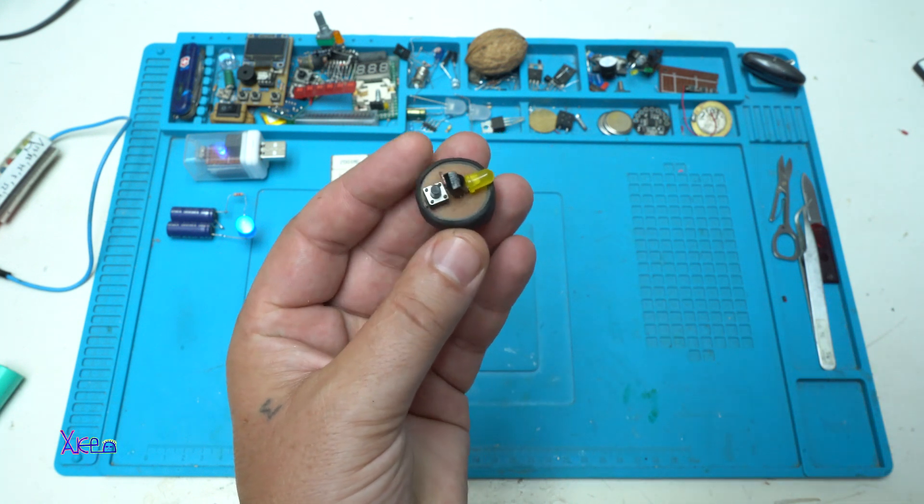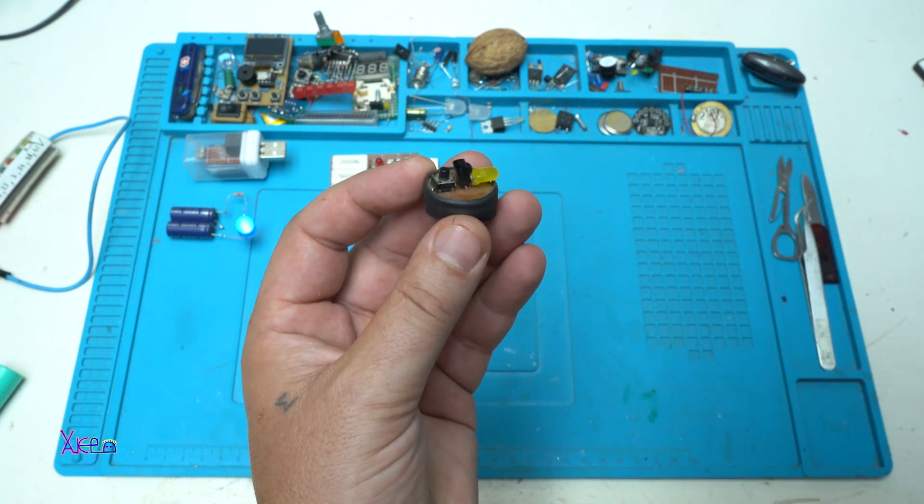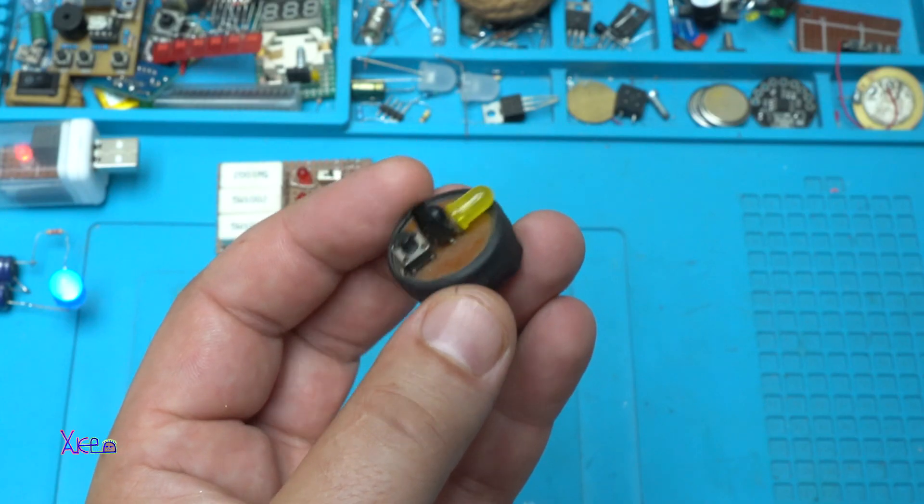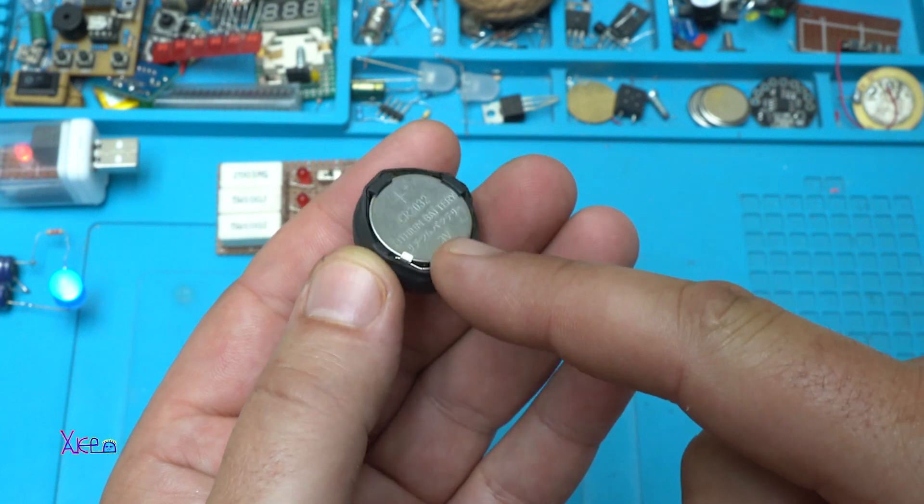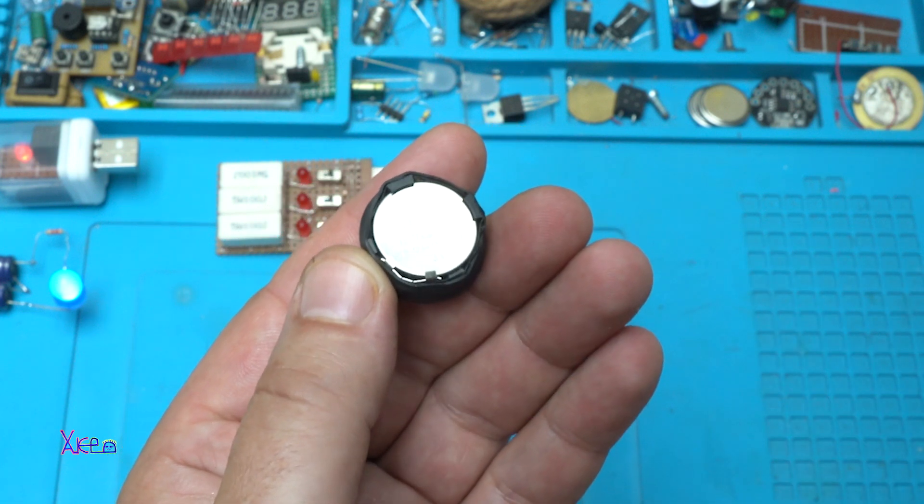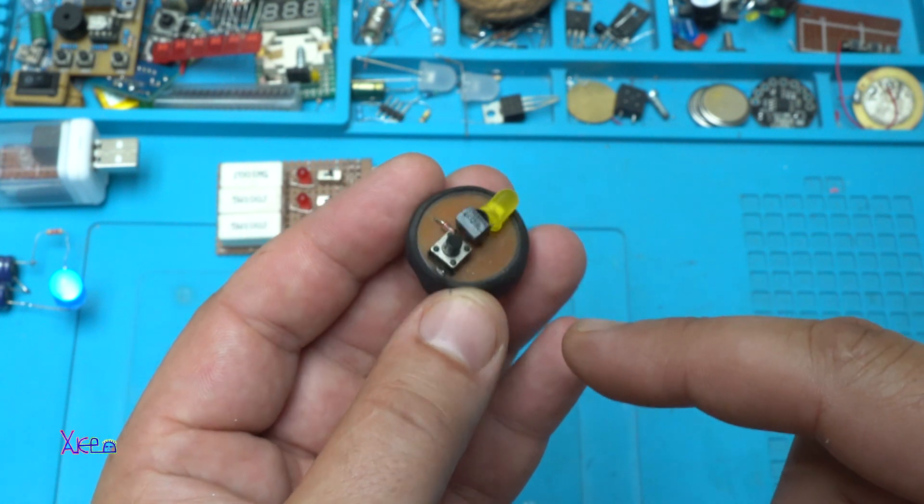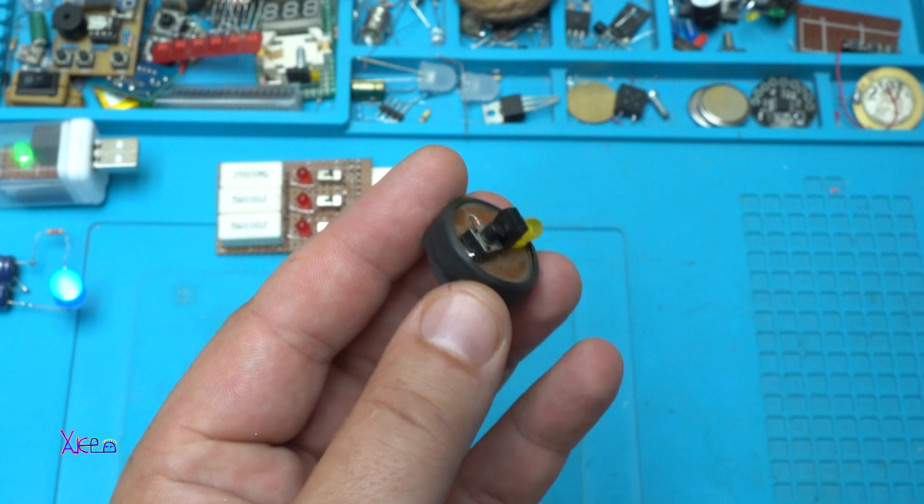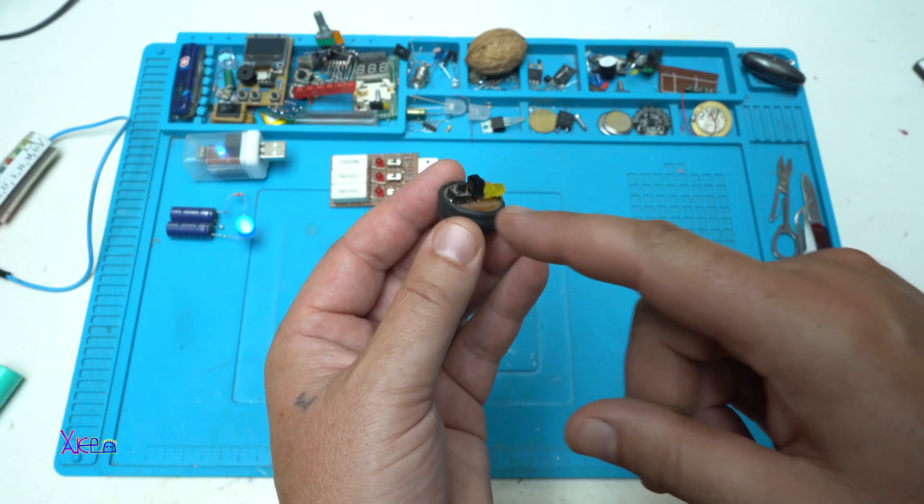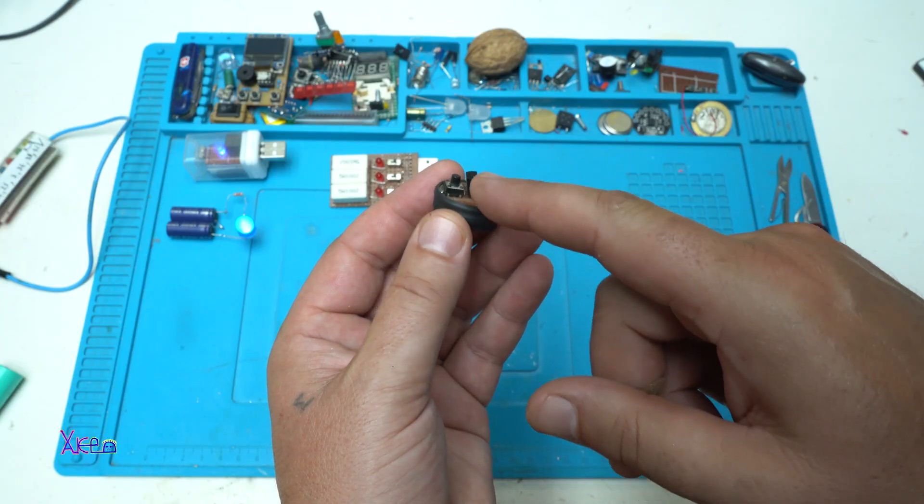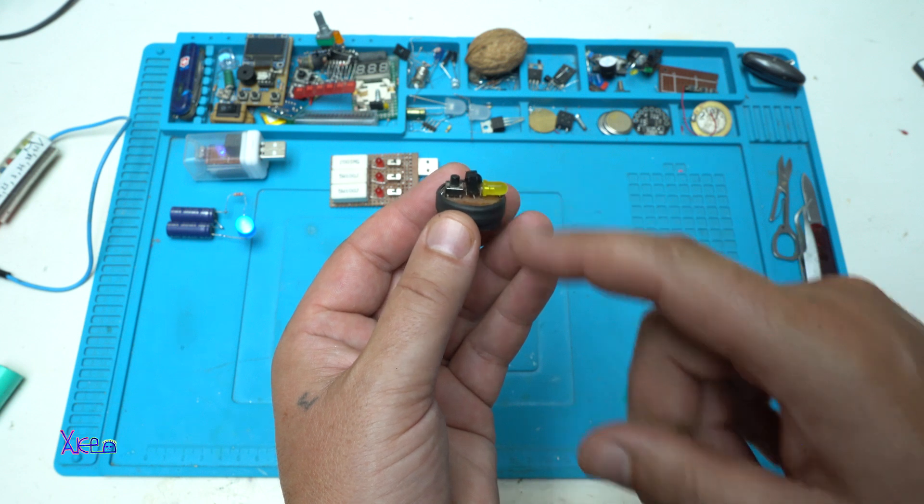Believe it or not this is a remote control tester using as power a coin battery, lithium battery 3 volts, and it has only four components: a push switch, the infrared receiver, and the LED.